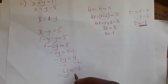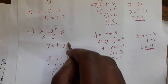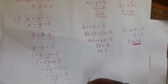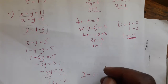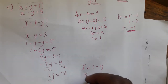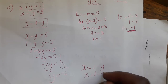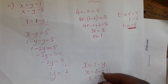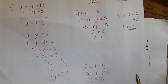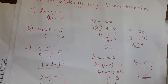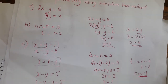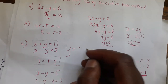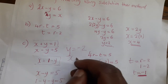Y equals negative 2. Remembering our formula x equals 1 minus y, and substituting y equals negative 2, we get x equals 1 minus (negative 2), which gives us a positive, so x equals 3.